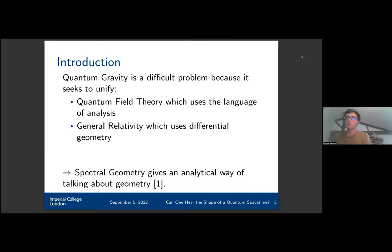Quantum gravity is a difficult problem in part because it seeks to unify two areas of physics that use different mathematical language. QFT is based on analysis whereas GR uses differential geometry as its framework.